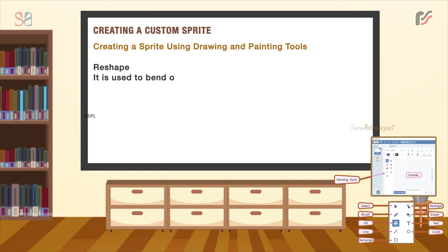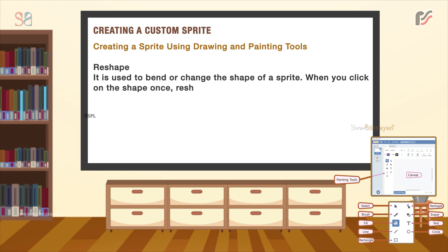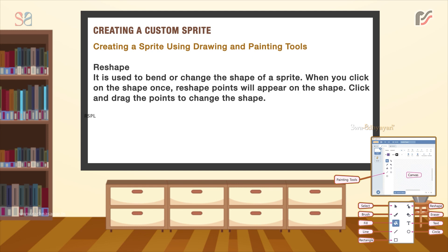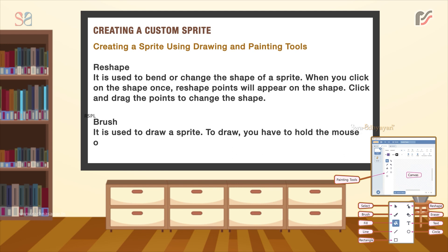The Reshape tool is used to bend or change the shape of a sprite. When you click on the shape once, reshape points will appear on the shape. Click and drag the points to change the shape. The Brush tool is used to draw a sprite. To draw, hold the mouse on the canvas and then click and drag it.